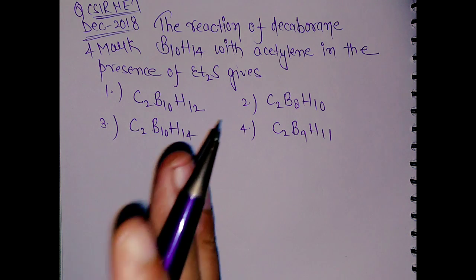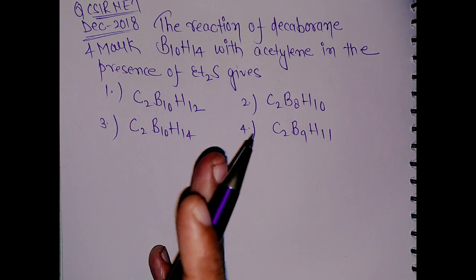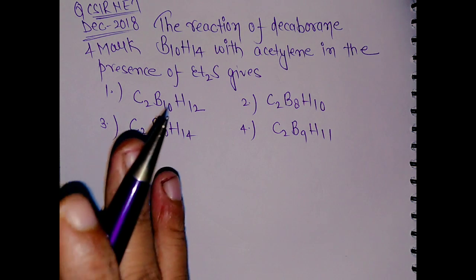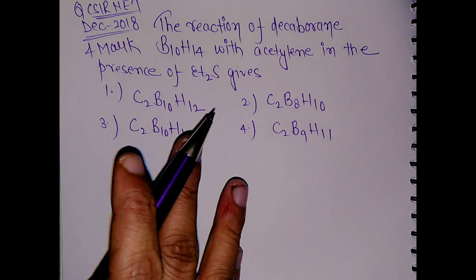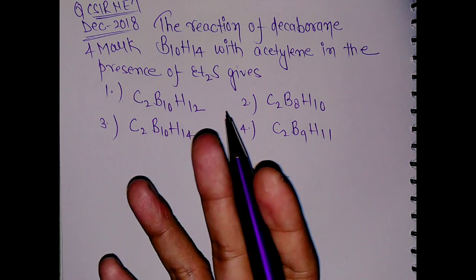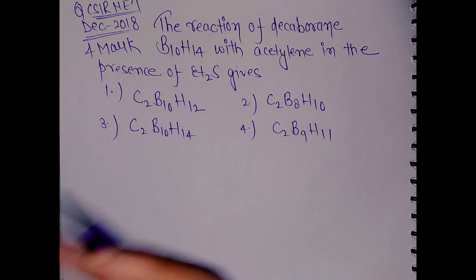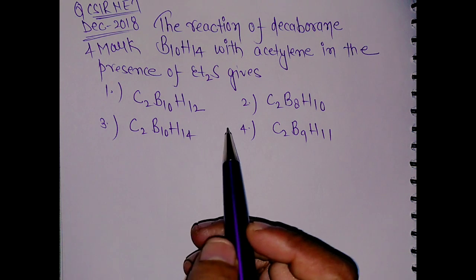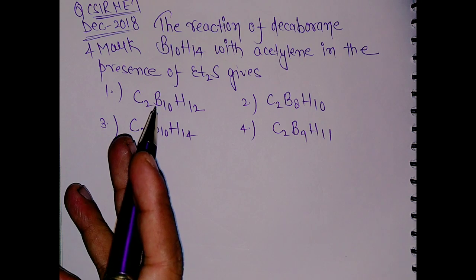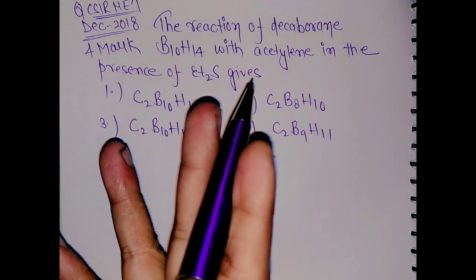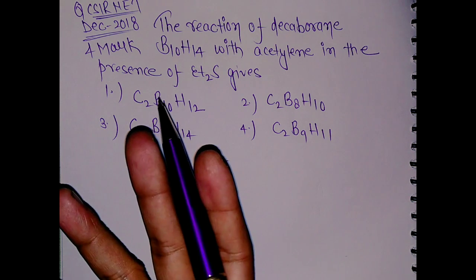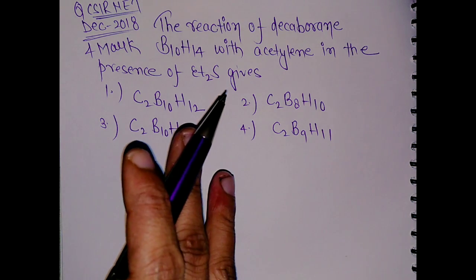In this question, specifically the origin of C₂B₁₀H₁₂ has been asked. It is a very special complex because it is one of the first carboranes to be discovered. I predict that in the next GATE or CSIR examination, questions will be asked on its isomers — ortho, para, and meta — particularly which has more thermal stability and which is more acidic. I will discuss those in a dedicated video.